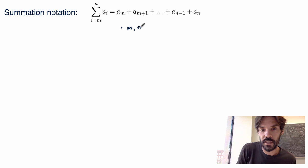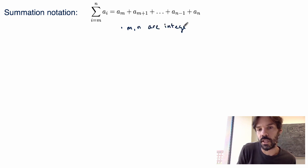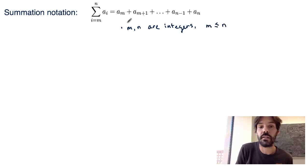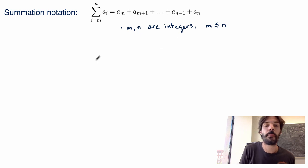In this notation I'm assuming two things: first, that m and n are integers, otherwise the summation doesn't make any sense. Also by convention, I'm going to assume that m is less than or equal to n, so that I can sum it this way.